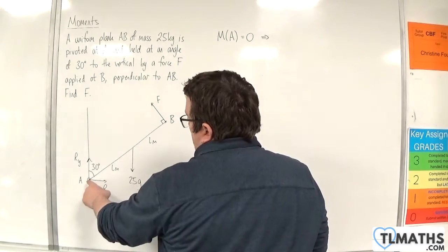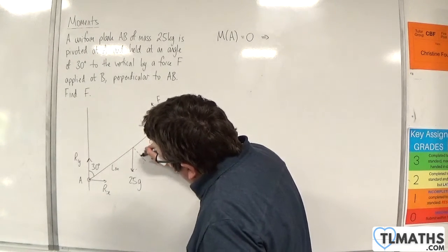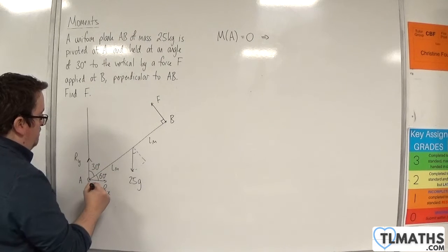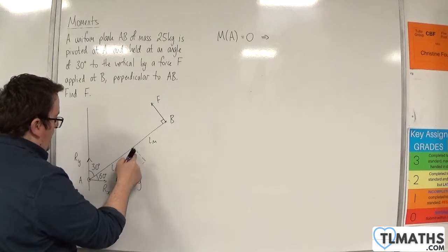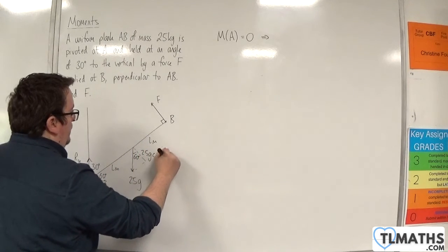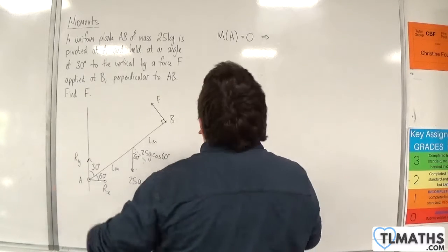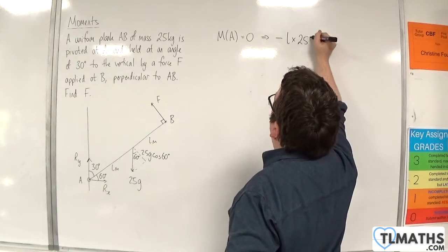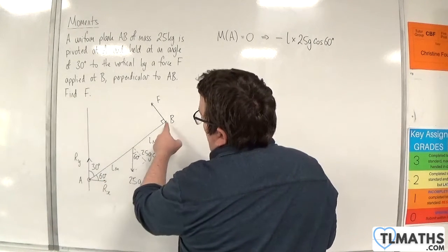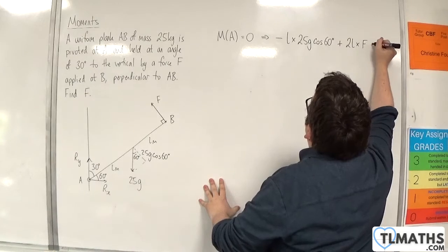So taking moments about point A, I'm L metres away from the 25G. And if we break that up into components, then this angle here is going to be 60 degrees. So this angle here would have to be 60 degrees. So this will be 25G cosine 60. So I'm L metres away from the 25G cosine 60 and that's going to be going round clockwise. So take away L times 25G cosine 60. And we're 2L away from F and that's going to be going round in an anticlockwise motion. So plus 2L times F. That's going to be equal to 0.